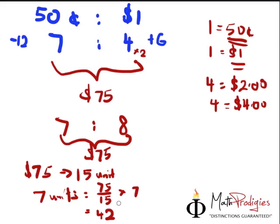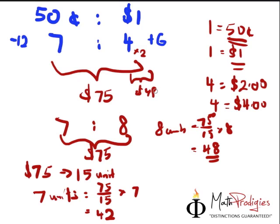And what is 8 units? Therefore, 8 units is equal to 75 divided by 15 times 8. What is 6 times 8? 48. But this is the value of the coins. 48 dollars. And this is 42 dollars.